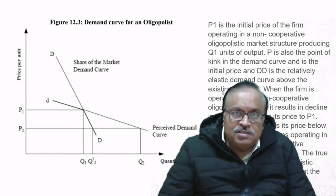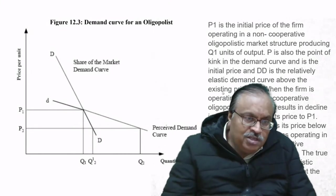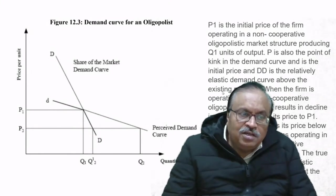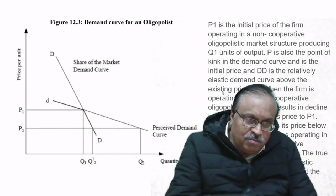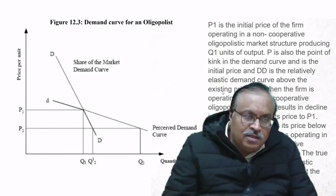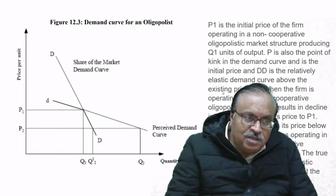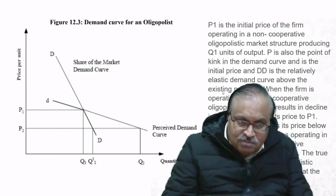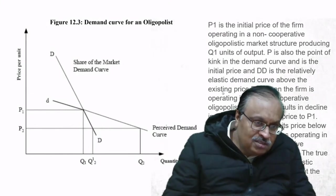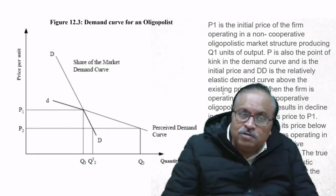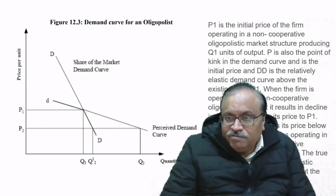When the firm is operating in a non-cooperative oligopolistic market, increasing the price results in a decline in sales. If the price is increased from P2 to P1, the demand should follow the capital DD curve, but what actually happens is that demand moves leftward to the small dd area. This turning of the demand at price level P1 is the kink in the demand curve—the demand gets twisted.